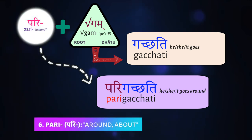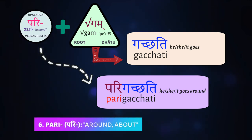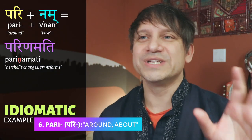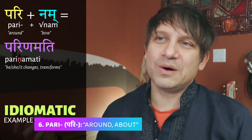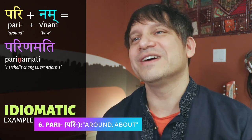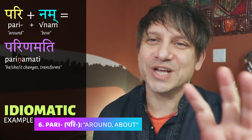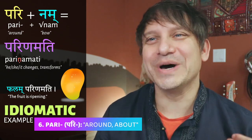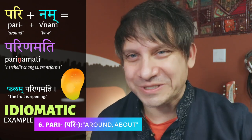Another directional prefix is pari, which means 'around.' It's cognate with the old Greek peri, as in perimeter, periscope, or periphery. Pari plus gam means 'to walk around something' — aśvaḥ vṛkṣam parigacchati, 'the horse walks around the tree.' Idiomatically, pari plus nam, 'to bow,' means 'to change, transform, or ripen.' Phalam pariṇamati — 'the fruit is ripening'; aham pariṇamāmi — 'I am changing, getting old.'